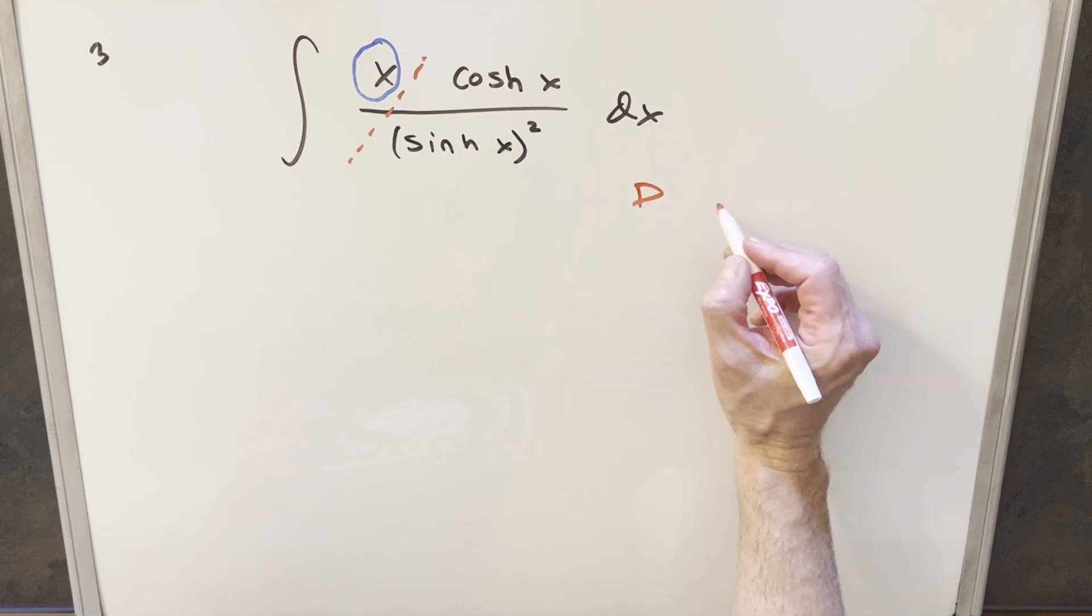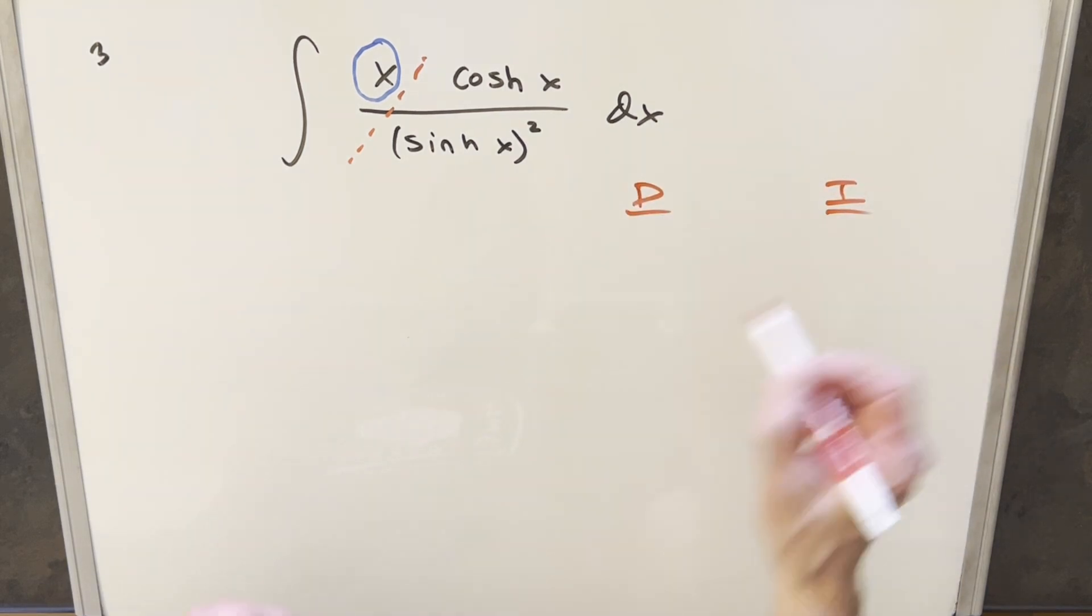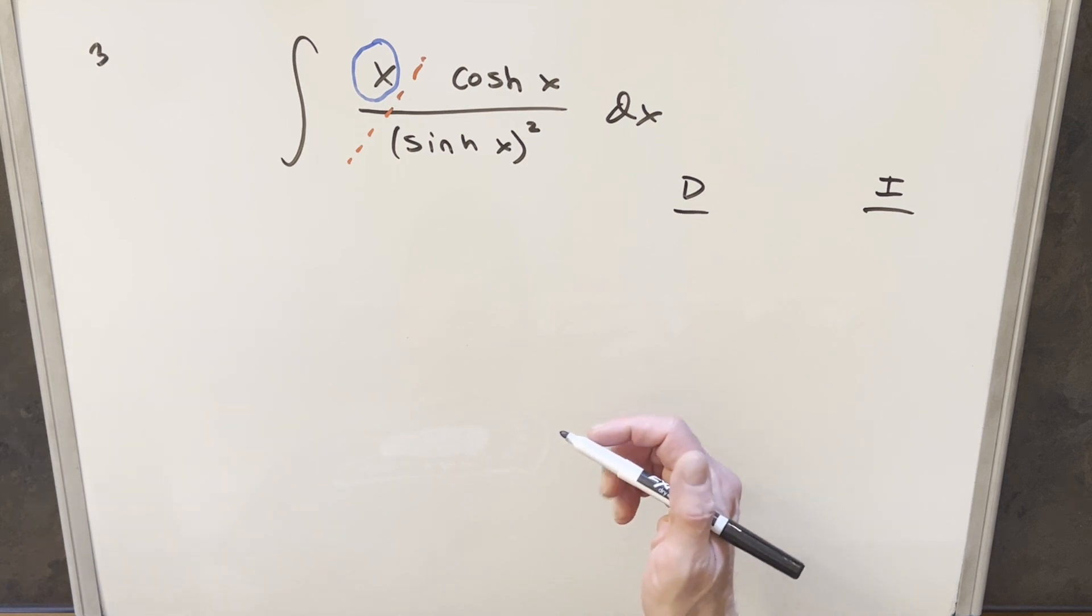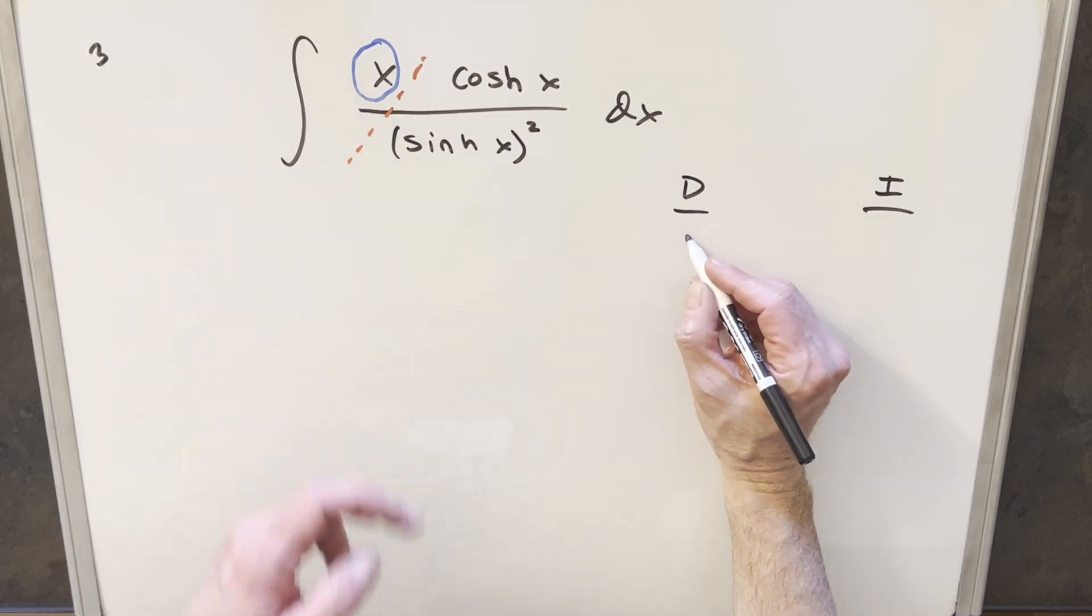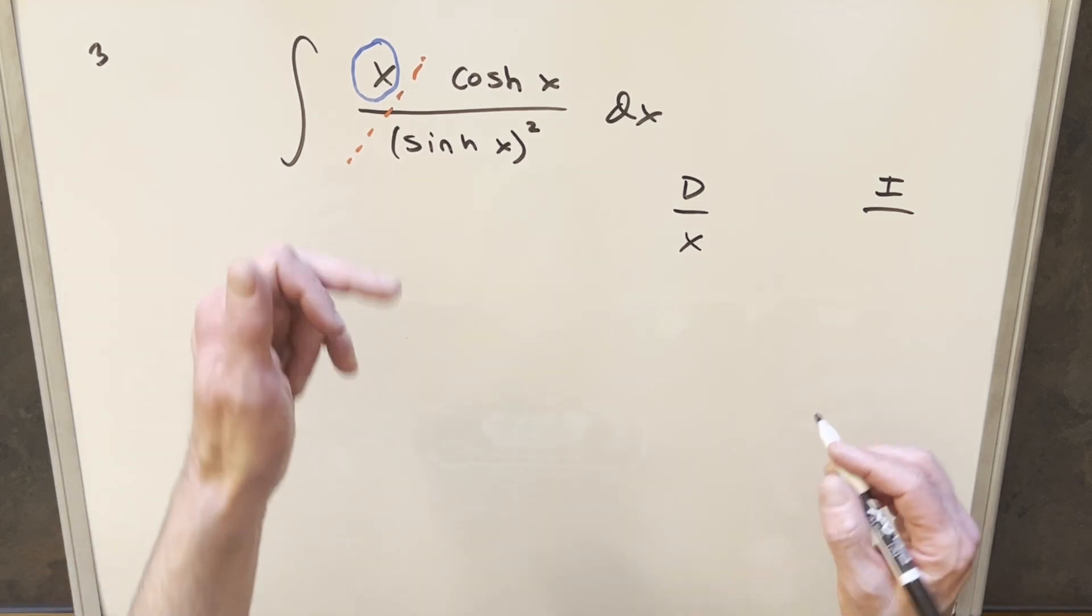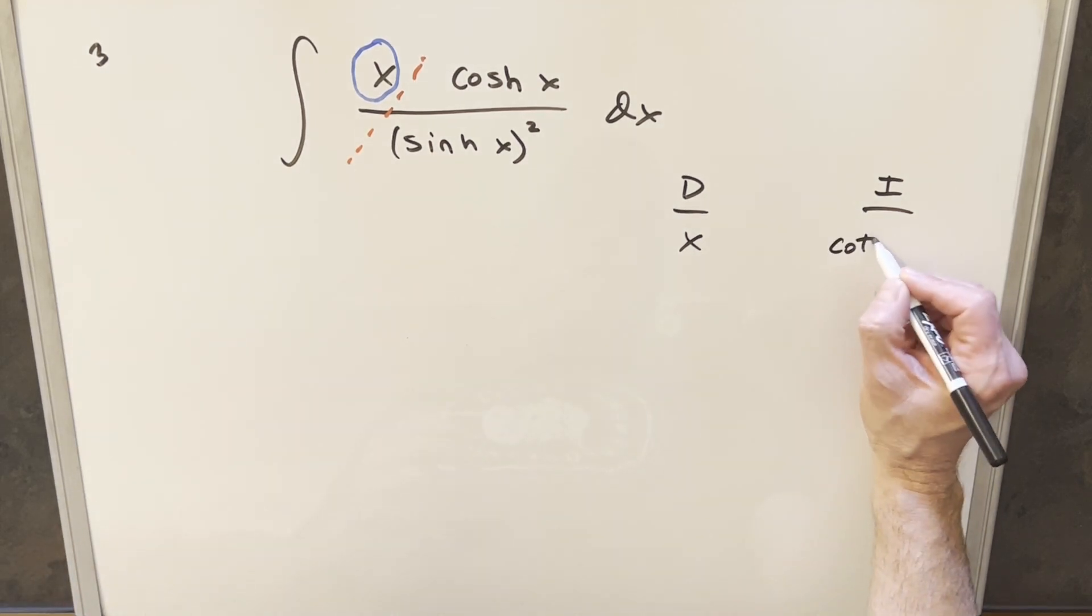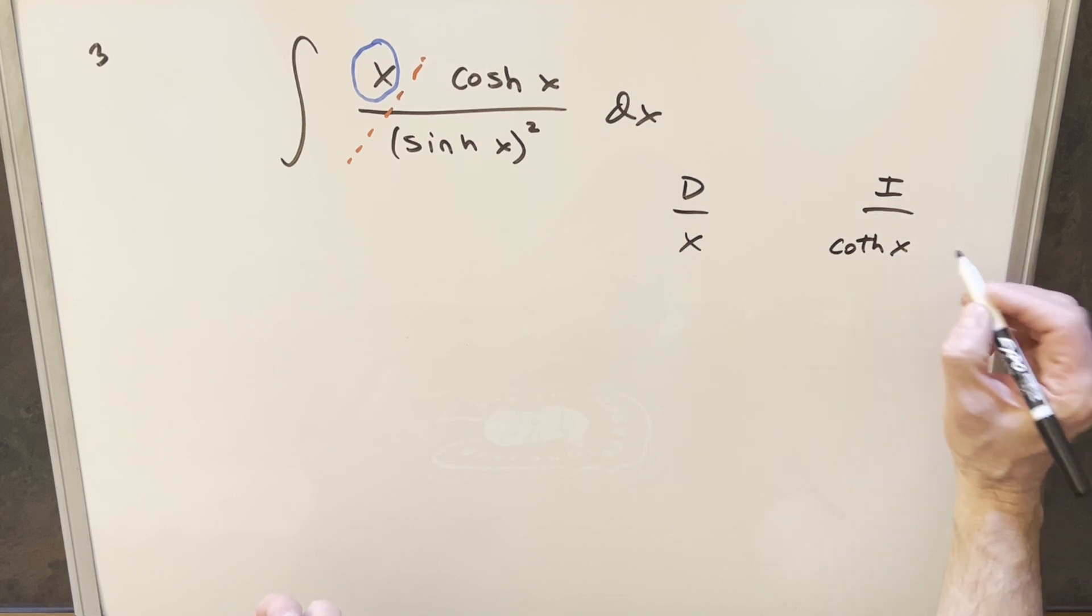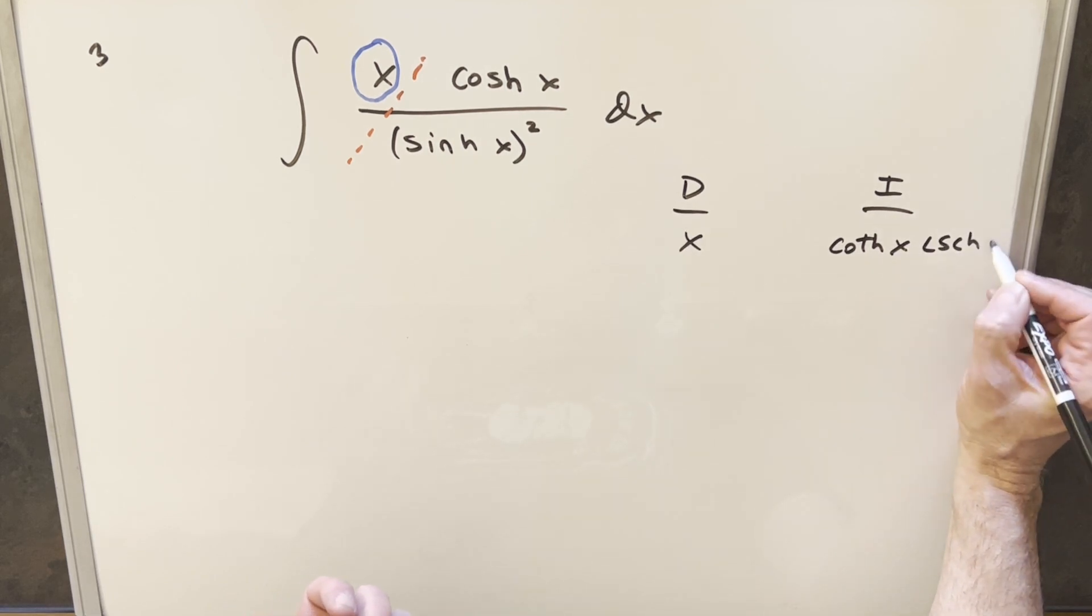So I'm going to do the DI method. Now we have our DI table written in black. What we'll do is we'll differentiate x and integrate all this stuff because this is going to be an easy integral. But like I said before, I'm going to actually rewrite this. I'm going to put this in the form of hyperbolic cotangent times hyperbolic cosecant.